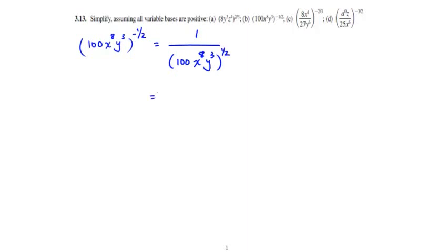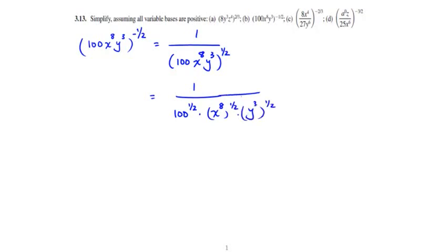Again using the Law of Exponents, each of the terms in the base gets raised to the common exponent of 1/2. So we get 1 over 100 to the 1/2 power, times x to the 8th to the 1/2 power, times y cubed to the 1/2 power. Taking each term individually: 100 to the 1/2 power is the square root of 100, which is 10.